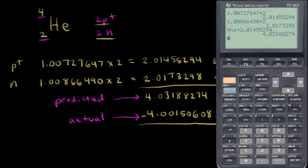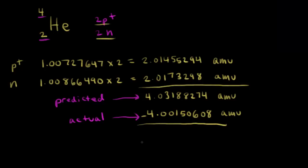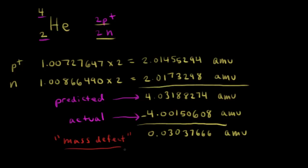So we have the predicted mass and then we subtract the actual: 4.03188274 minus 4.00150608, which gives us 0.03037666 AMUs. This is the difference between those two numbers, and we call this the mass defect — the difference between the predicted mass of the nucleus and the actual mass of the nucleus.